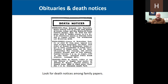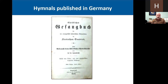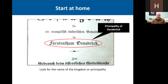Look for death notices among your family papers. Also, do you have Bibles or prayer books? Look for those as well and see if they have any information in them. Hymnals too — German immigrants often brought hymnals or prayer books with them. Many times these were printed locally. So if you do have a hymn book or a prayer book in your possession, see where it was published.